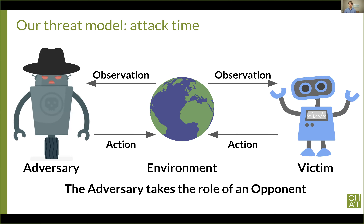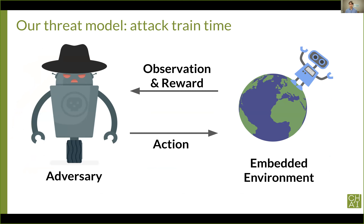We allow the adversary to train against a fixed, black box victim policy. We believe fixed victim policies reflect a common use case: if you have a safety-critical system like a self-driving car, you're probably not going to have it making radical updates to its policy while deployed, because safety assurances from testing might not hold after it's changed. Since the victim is fixed, it's natural to embed the victim in the environment, treating it as a single-agent environment. The attacker's goal is formulated as solving a reinforcement learning problem in this embedded environment, and we attack the victim using proximal policy optimization.